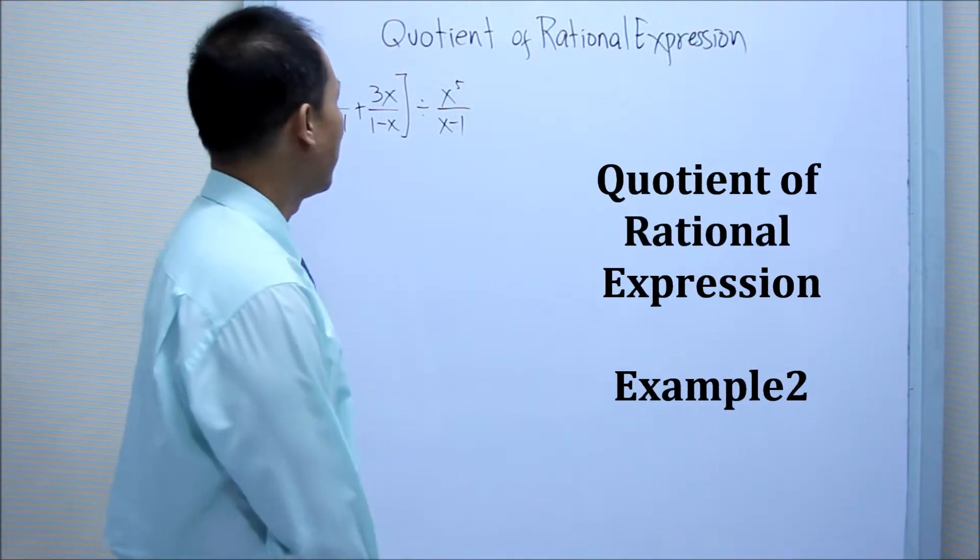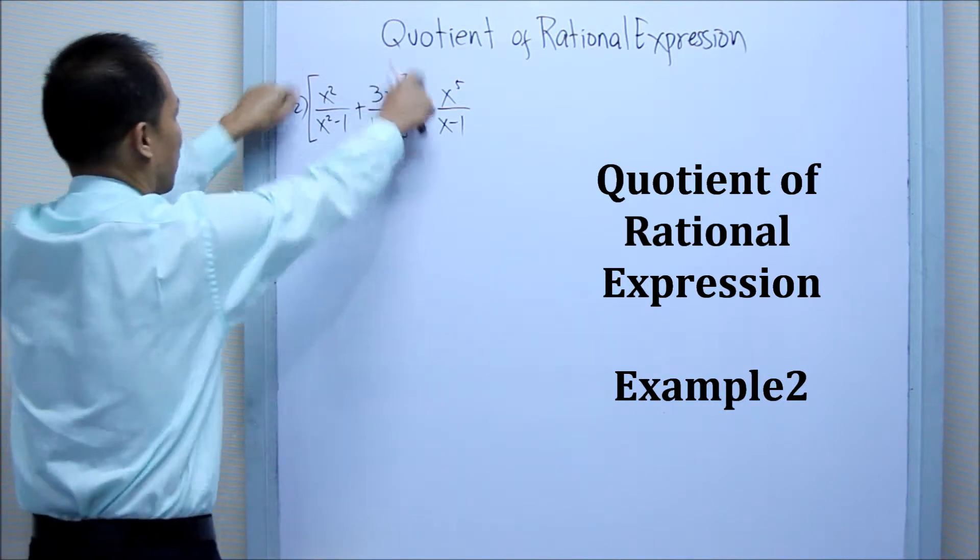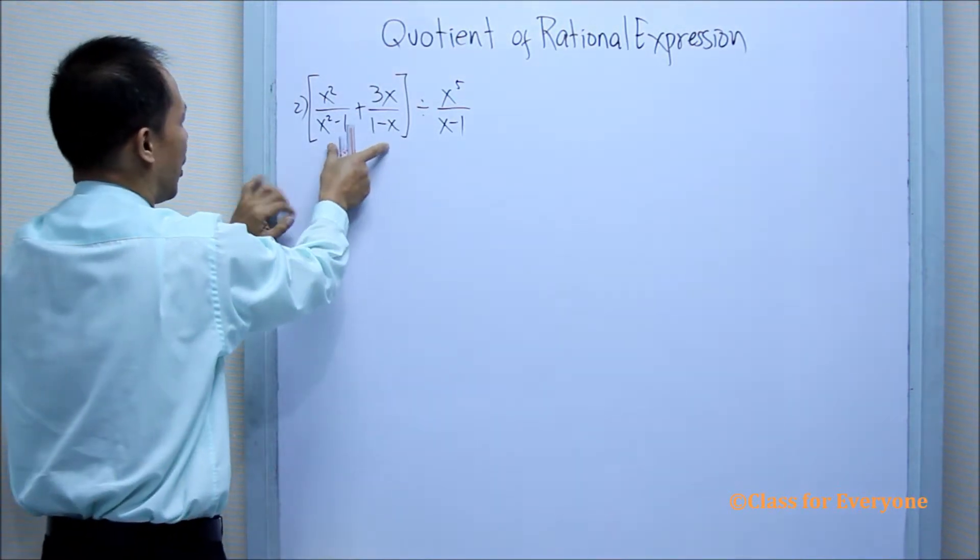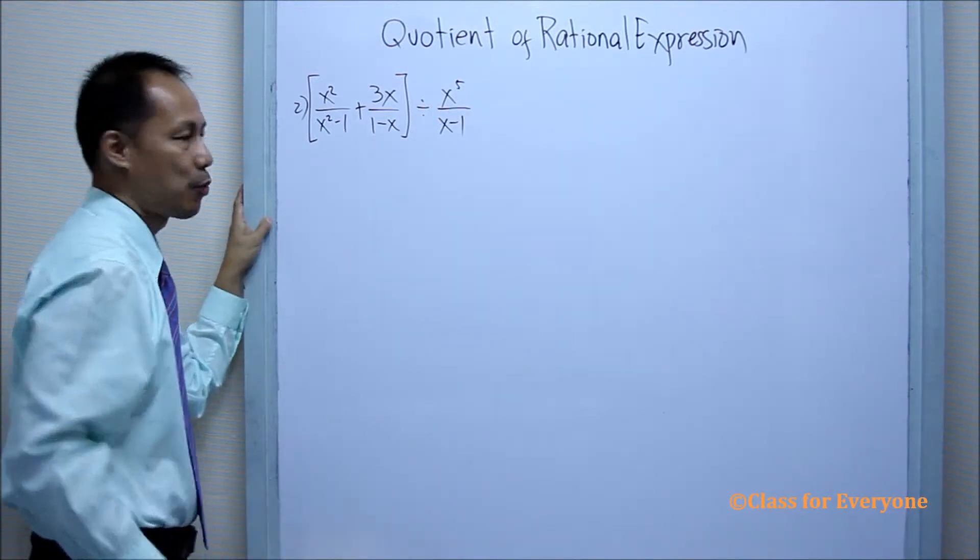Let's have another example in finding the quotient of rational expressions. This grouping symbol states that it should be added first before we divide it by this rational expression.